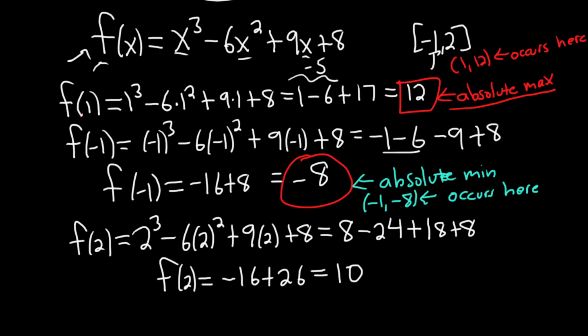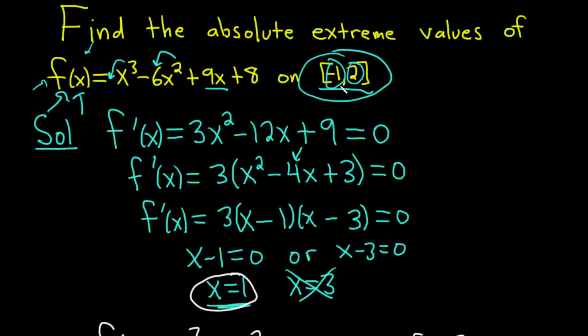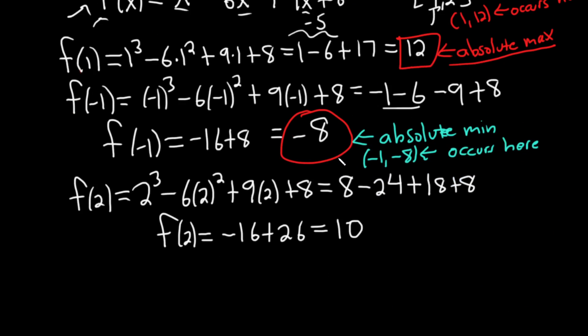Recall that every continuous function on a closed interval has both an absolute maximum and an absolute minimum. That's the extreme value theorem. In our case, we had a polynomial, which is a continuous function.